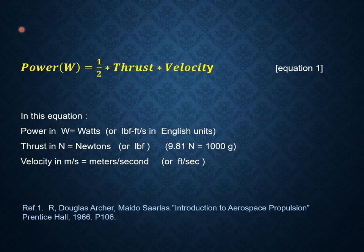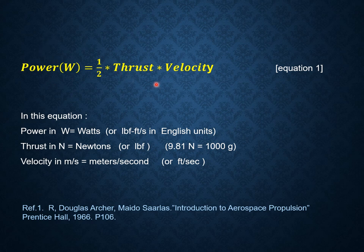This is not so surprising if we consider the following equation. For a ducted propeller — from reference 1 — power is proportional to thrust times velocity. So if the velocity changes within a specific range, we have that thrust is almost linear with the power. This is what we see in the graph.